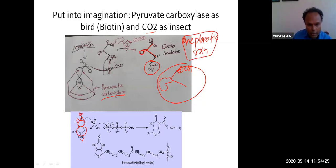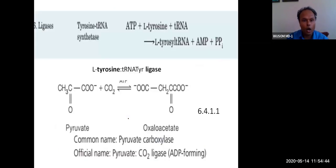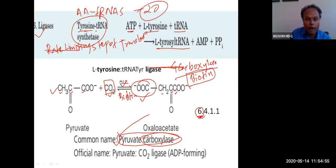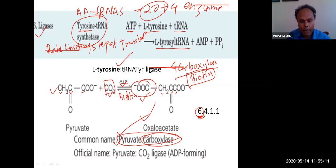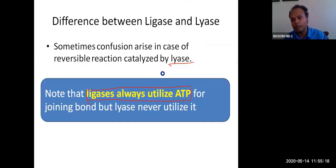All carboxylases and all 20 aminoacyl-tRNA synthetases are ligases. With these, you have already studied about 14 important enzymes. Enzyme classification is very important to understand biochemical pathways. Ligases are EC group six.